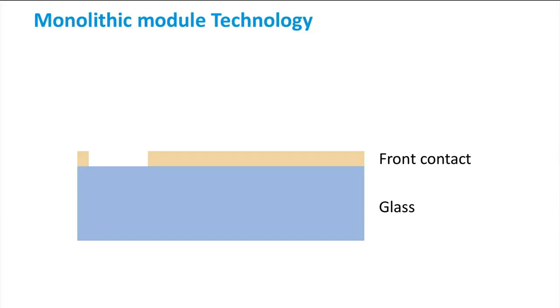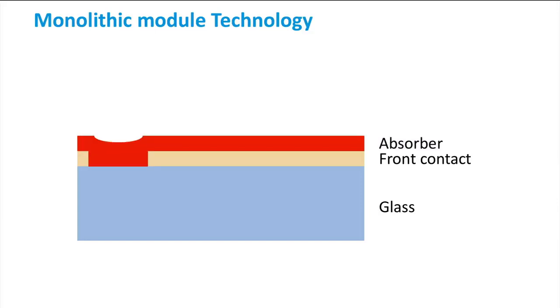Then, the photoactive layers are deposited on top of the front contact, creating a thin-film and filling the gap left by the first laser scribe. After depositing the absorber layer, the second laser scribe, called P2, is performed. The wavelength of the laser has to be chosen in this case such that it is not absorbed by the glass and the transparent front contact, but in the absorber layer. The P2 laser scribe leaves a gap in the absorber layer.